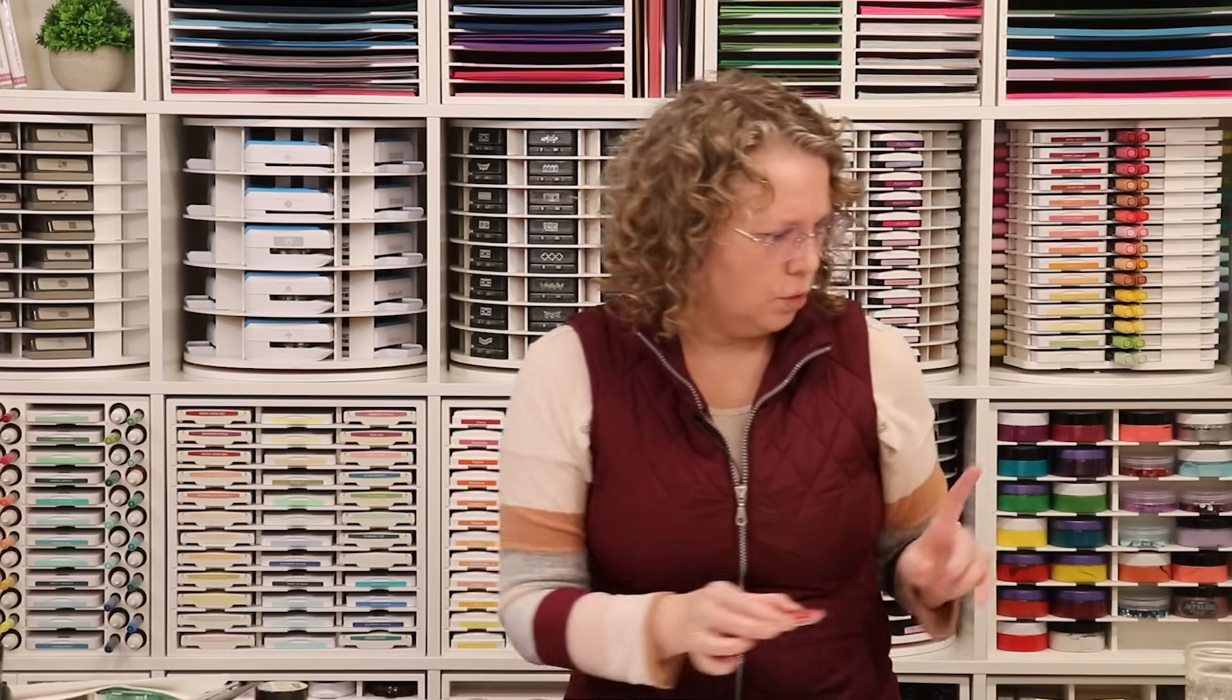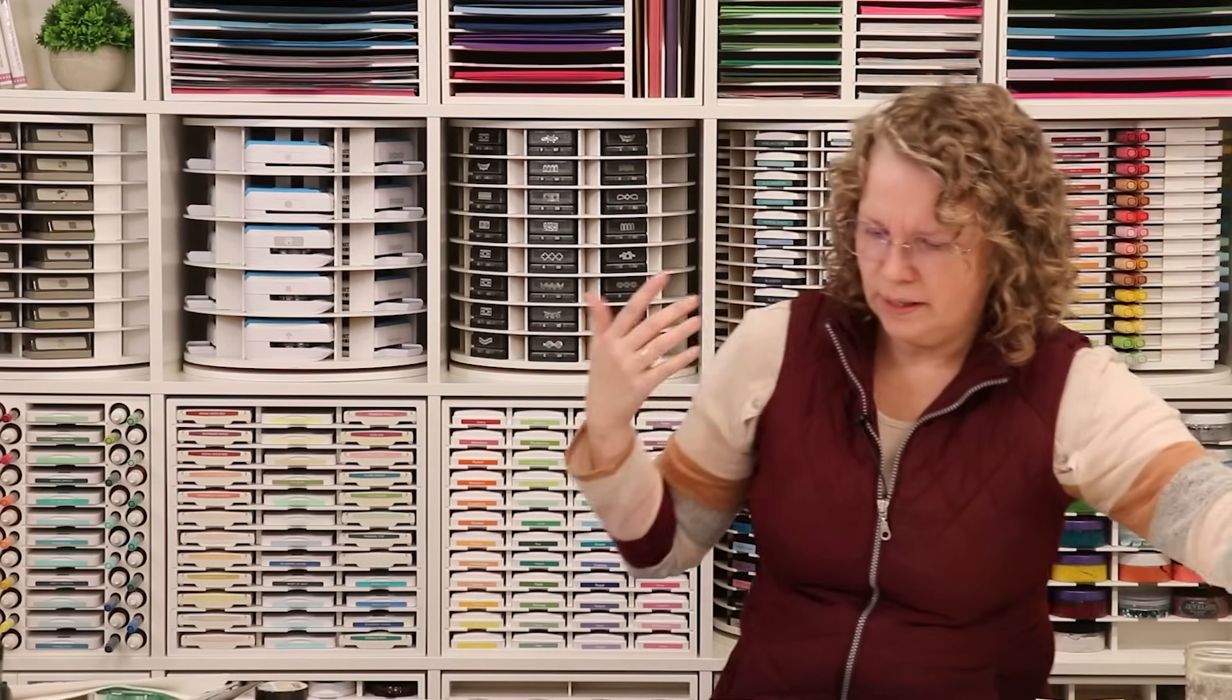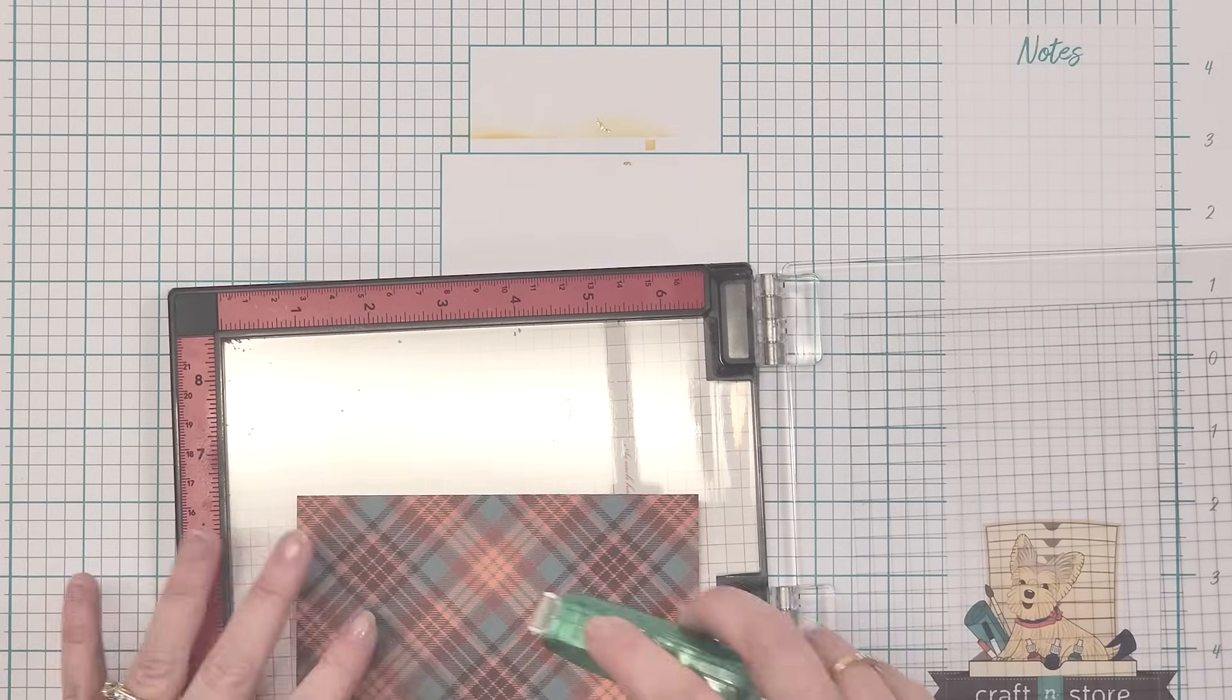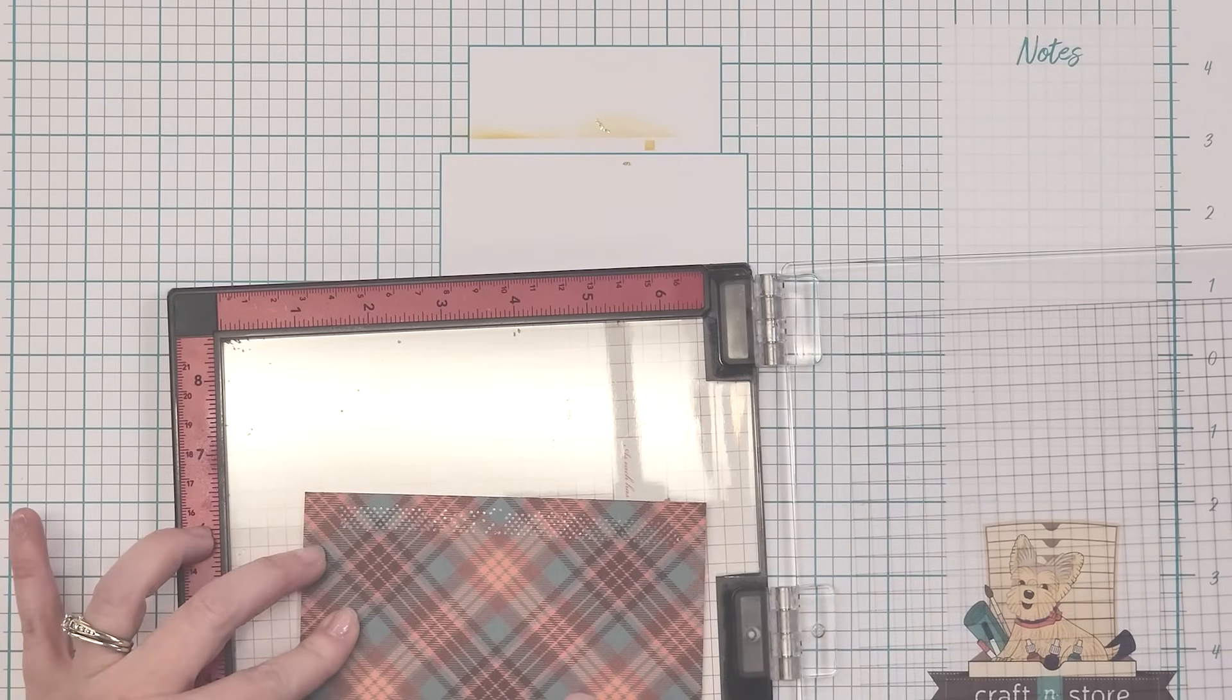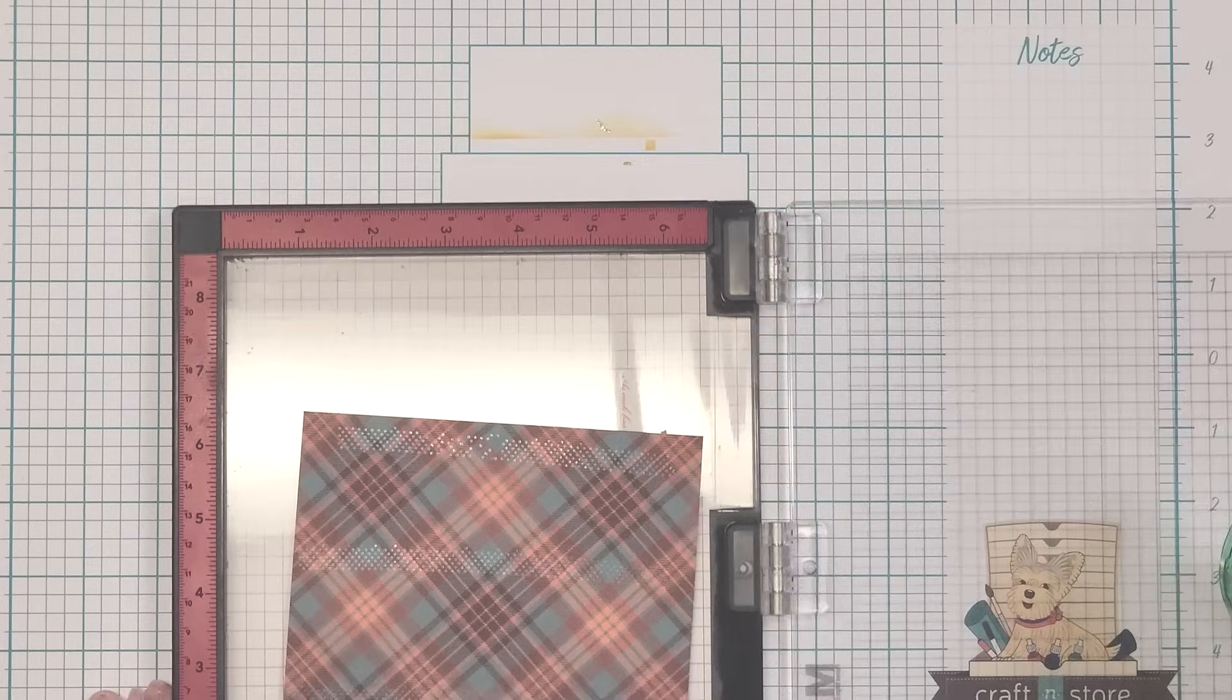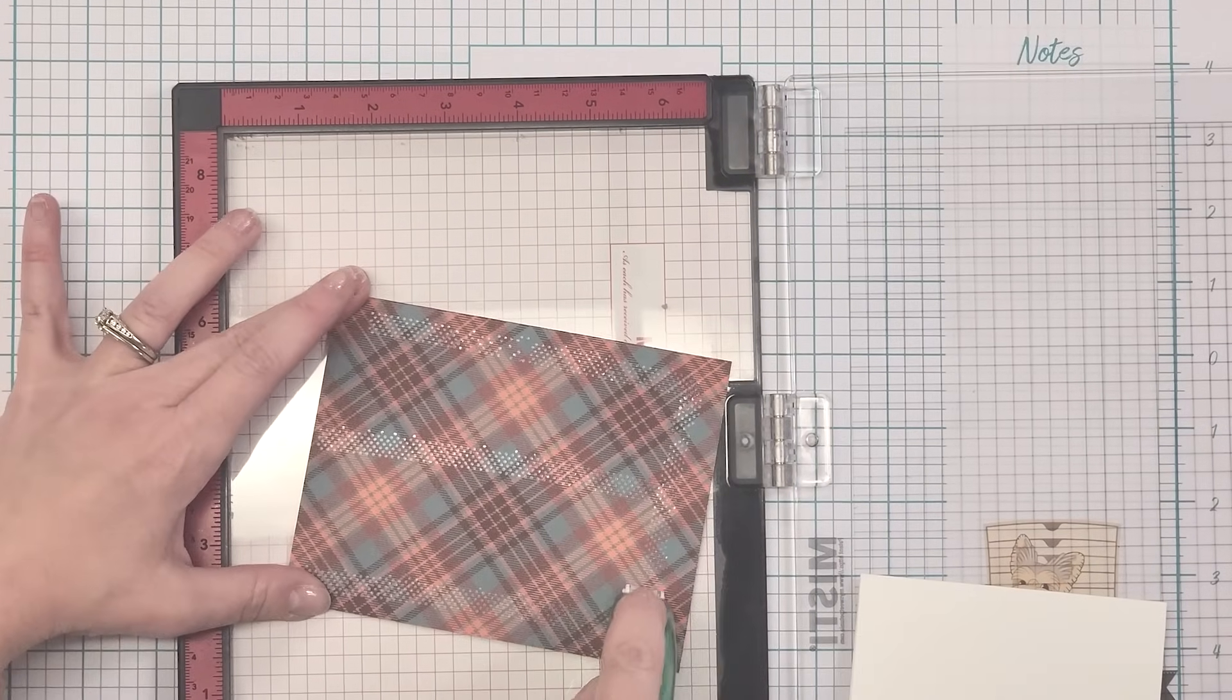If you ever want to adhere a full panel to a card front, either designer paper or a stamped layer, and you don't want it to overhang, you want it to line up nice. So first thing we're going to do is grab my adhesive. And I'm going to put this on my designer panel. Here we go. All right.